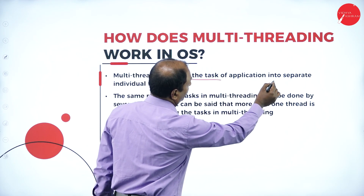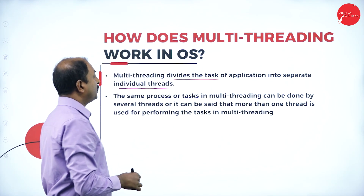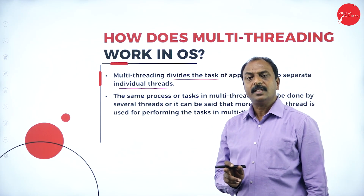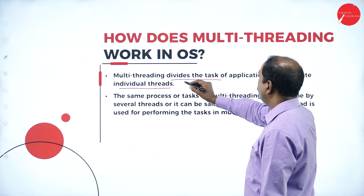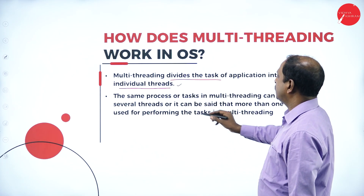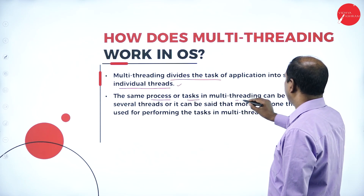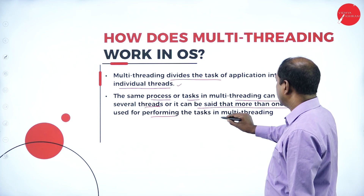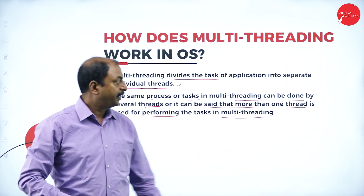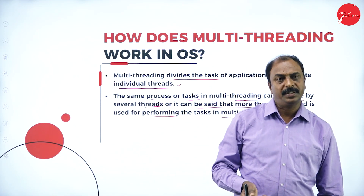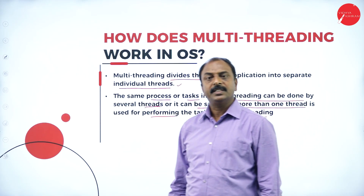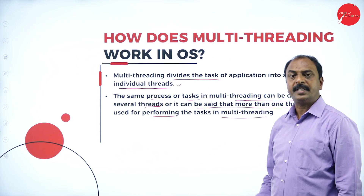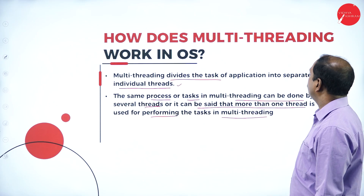How does multi-threading work in an operating system? Multi-threading divides the task of an application into separate individual threads. This is also a concept of multitasking — more than one task to be executed simultaneously — and all tasks share the common resources. The same process or task can be done by several threads, meaning more than one thread is used for performing the task in a multi-threading operating system.